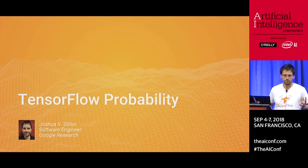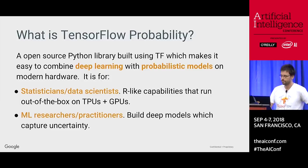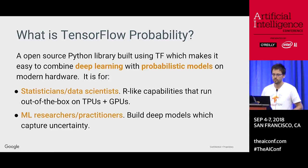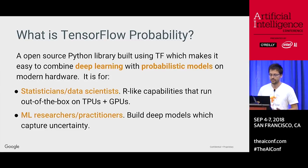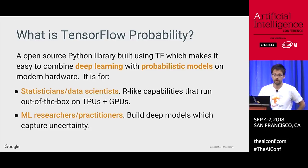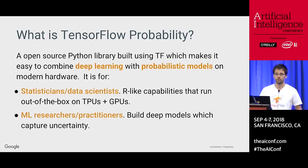Hi, I'm Josh, and today I'm going to be talking about TensorFlow Probability, which is a project I've been working on for two years now. So what is TensorFlow Probability? We are part of the TensorFlow ecosystem. It's a library built using TensorFlow, and the idea is to make it easy to combine deep learning with probabilistic modeling. We're useful for statisticians and data scientists, providing R-like capabilities that take advantage of GPU and TPU, and to ML researchers and practitioners so you can build deep models which capture uncertainty.